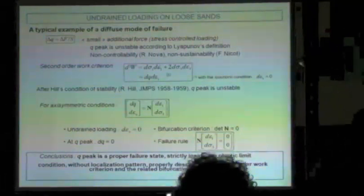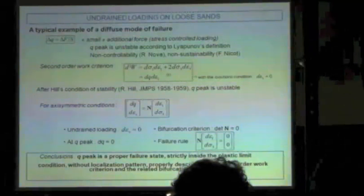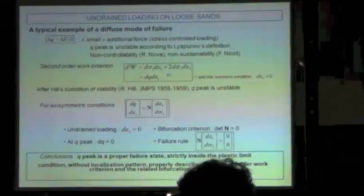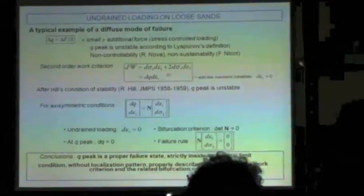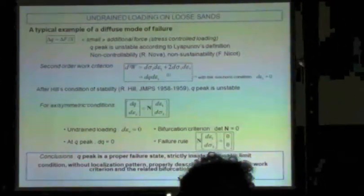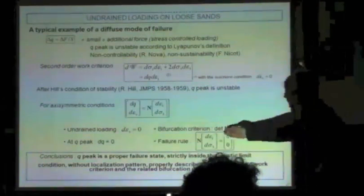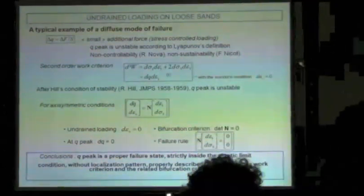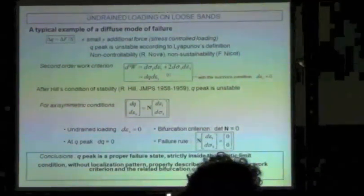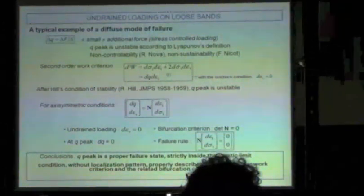What is interesting is that this is clearly not a flow rule, because you have a mixed relation between dε₁ and dσ₃. In classical plasticity, the flow rule is a relation between incremental strains. Here you have a mixed relation. I have called this a failure rule to distinguish it from the classical notion of flow rule.